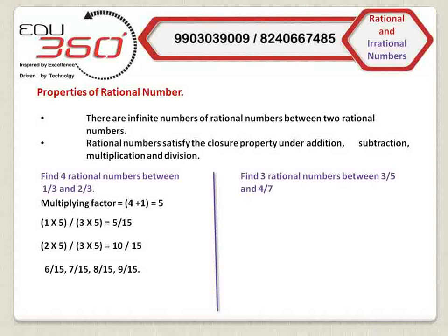Now consider another problem: find three rational numbers between 3 by 5 and 4 by 7. Here the problem is a little different because these two fractions, 3 by 5 and 4 by 7, are not like fractions as their denominators are different. To make them like fractions, we have to multiply both numerators and denominators of 3 by 5 by 7, and 4 by 7 by 5. As a result, both fractions will be converted into like fractions: 21 by 35 and 20 by 35, respectively.